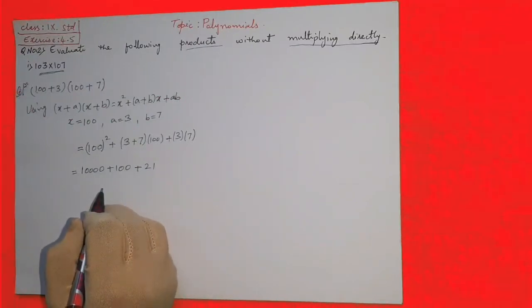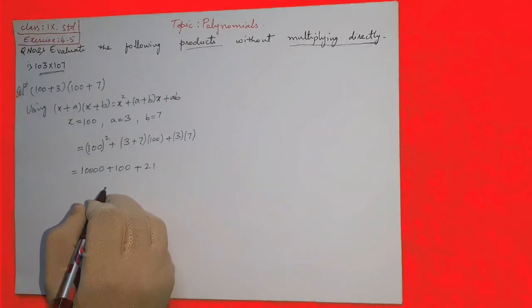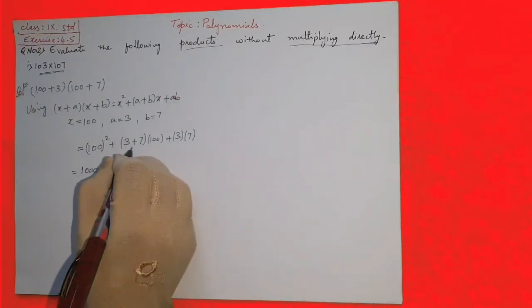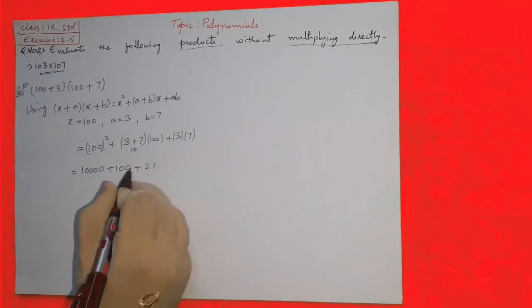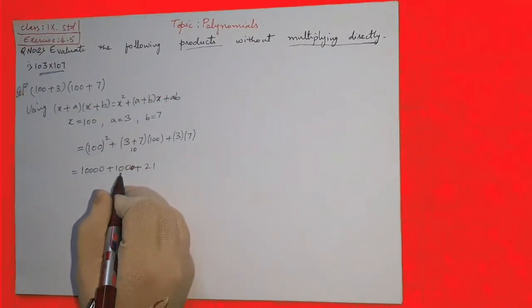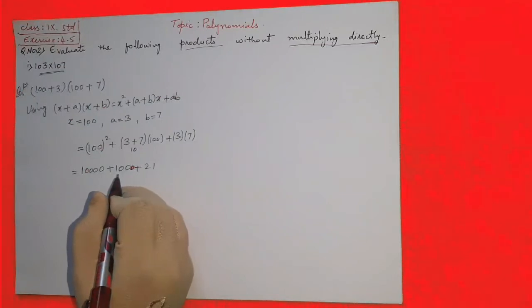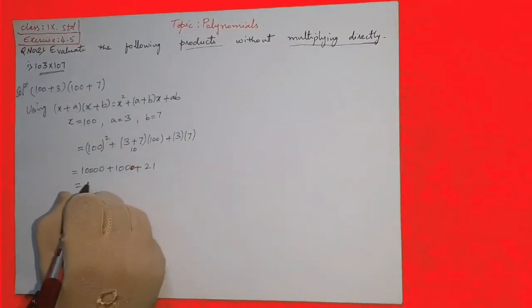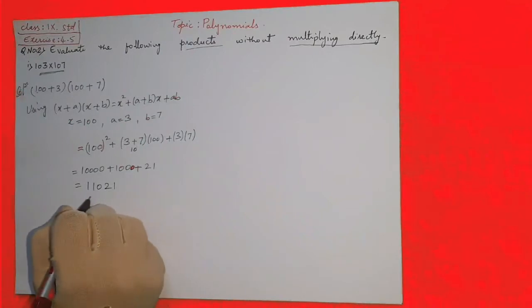3 plus 7 is 10, then 10 into 100 will be 1000. So the answer is 11,021. We will see once again the solution.